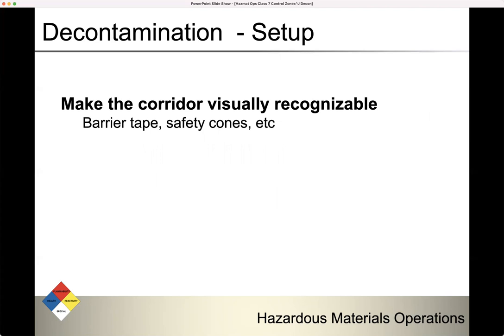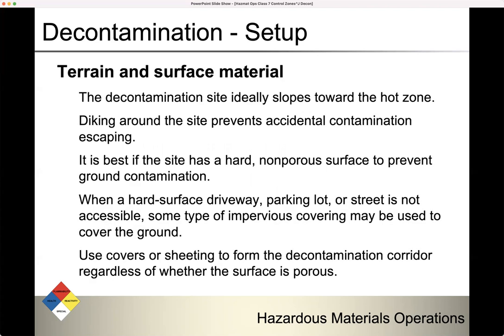Make the corridor visually recognizable using barrier tape, safety cones, etc. Consider terrain and surface material — ideally it slopes toward the hot zone, not an excessive grade, but materials should not roll downhill toward the cold zone. You can dike around the site to prevent accidental contamination from escaping. The best surface is hard and non-porous to prevent ground contamination. When a hard surface driveway, parking lot, or street is not accessible, use an impervious covering such as a large plastic tarp. Use covers or sheeting to form the decontamination corridor regardless of whether the surface is porous or not.